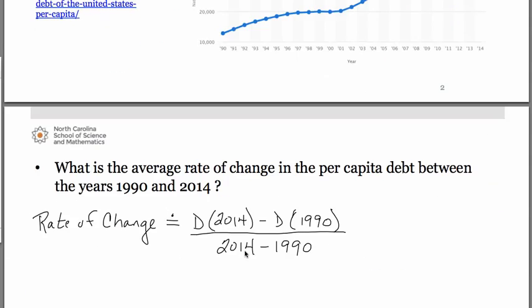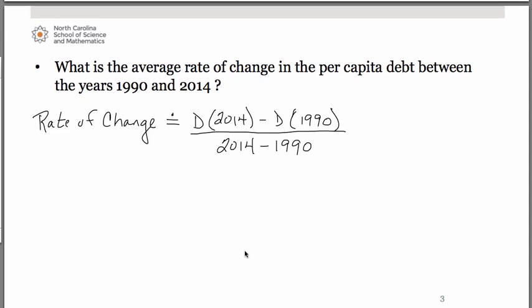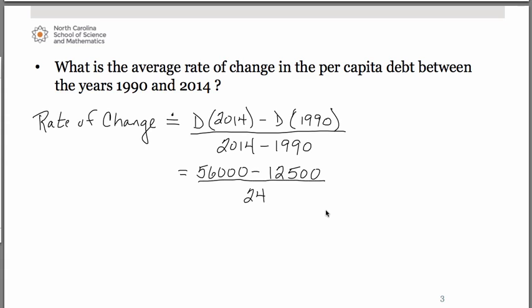So using those values: the debt in 2014 we estimated at about $56,000, and $12,500 for 1990. Of course there's a 24-year difference in the denominator. If you number-crunch that, you should get $1,812.50.